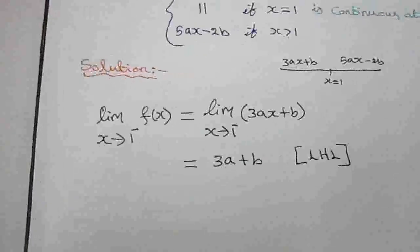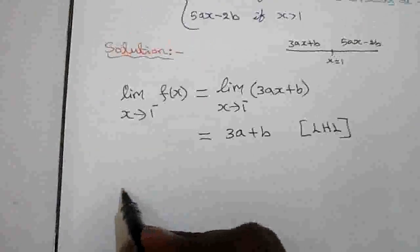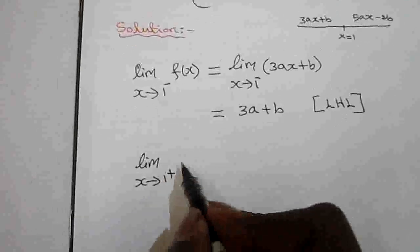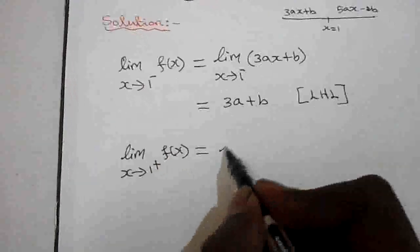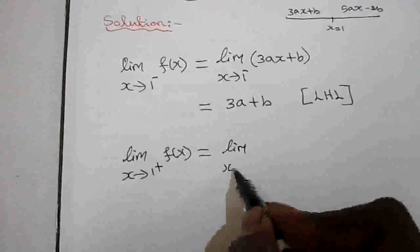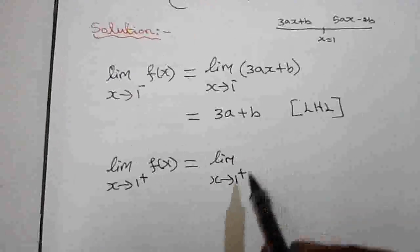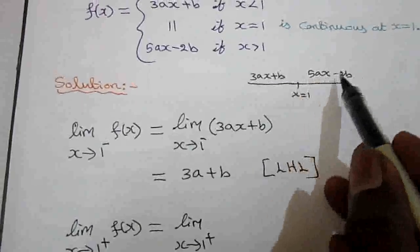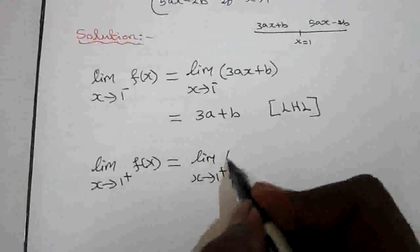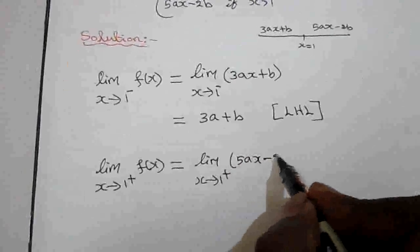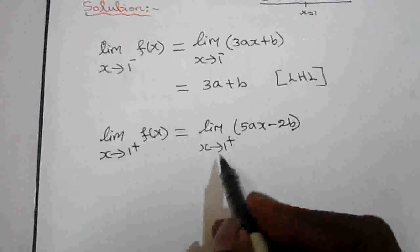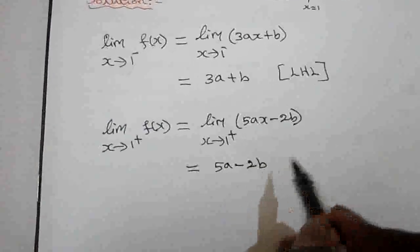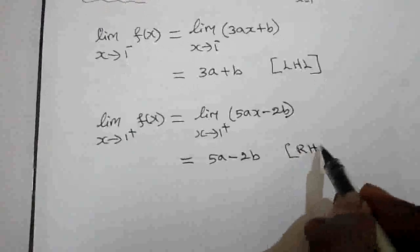Next, finding the right-hand limit: the limit as x tends to 1 plus of f(x). The right-hand limit means the right-hand side of 1, so the function value is 5ax minus 2b. Substituting x equal to 1 gives the right-hand limit value as 5a minus 2b.